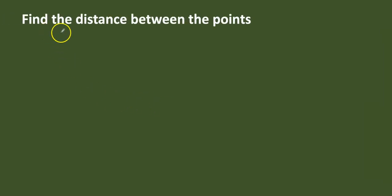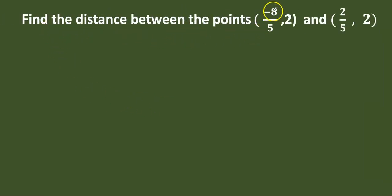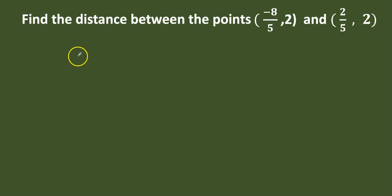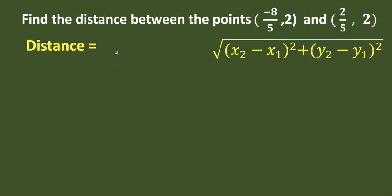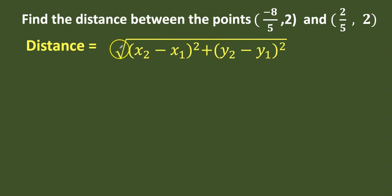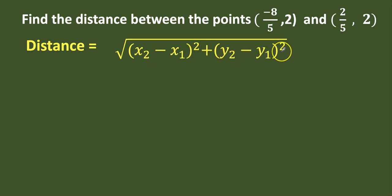Find the distance between the points minus 8 by 5 comma 2 and 2 by 5 comma 2. The formula is: distance is equal to square root of x2 minus x1 the whole square, plus y2 minus y1 the whole square.